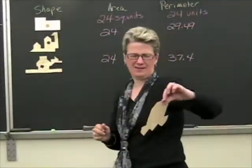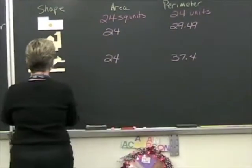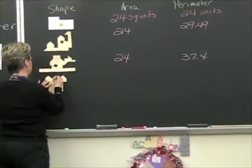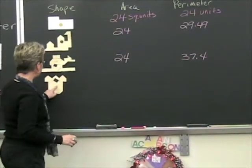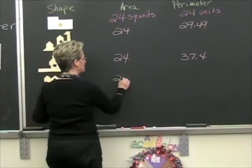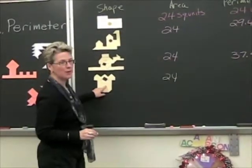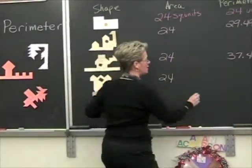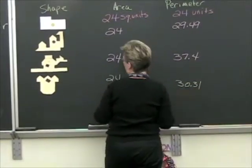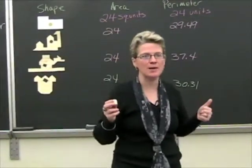Here's another one — looks like a cartoon head, a transformer. Its area again is 24, but this perimeter is 30.31.